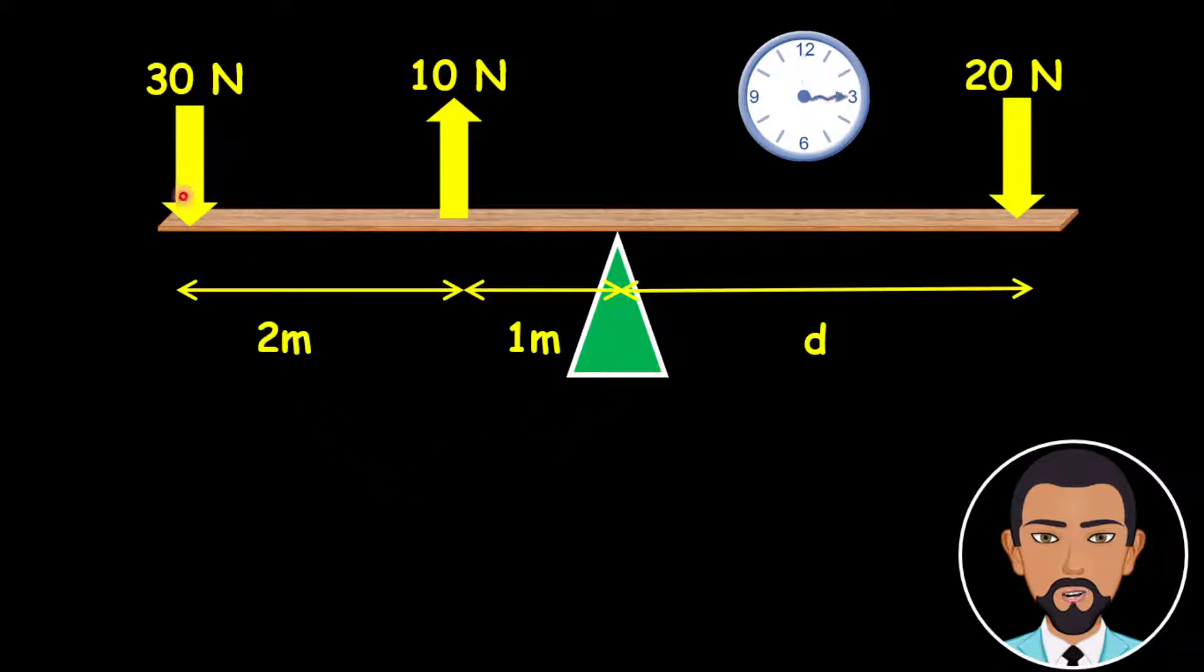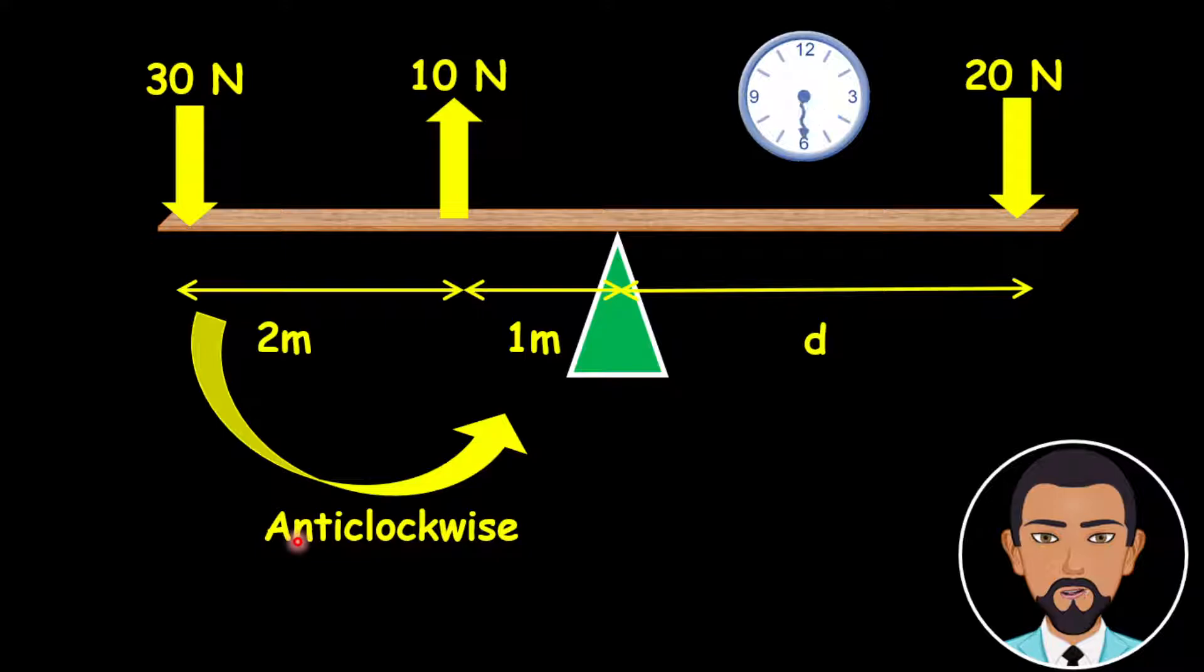Alright, so look at the 30 newtons. First, the 30 newtons is turning in that direction indicated by the yellow arrow and it is going opposite the clock, so this will be an anti-clockwise moment.